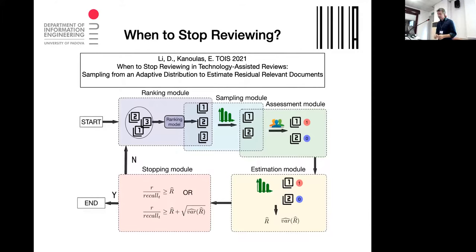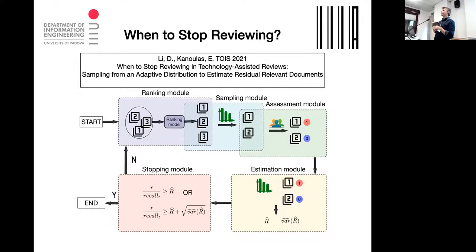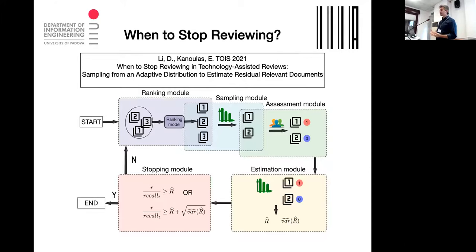I refer to a very recent paper by Lee and Canulas from the University of Amsterdam. As you can see, there is a ranking module as I showed, then a clever sampling module with an inclusion probability — a probability distribution for picking documents, not uniformly distributed, but proportional to the rank of the document. Then you assess, and with the estimation model you can say, with some level of uncertainty, how many relevant documents remain in the collection. You can then improve this estimation by adding more samples, and then decide whether to stop.